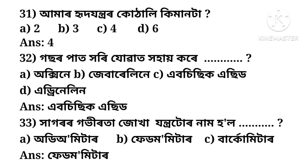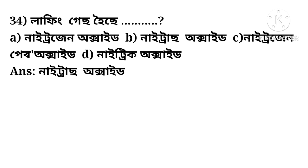The next question asks what acid is present in vinegar. Options include Nitrozen Oxy, Acetic Acid, and Adrenalin. The correct answer is Acetic Acid. The following question asks the name of the instrument that measures sound. Options are Audiometer, Phedomometer, and Barcometer. The correct answer is Phedomometer. The subsequent question's answer is Nitrous Oxide.